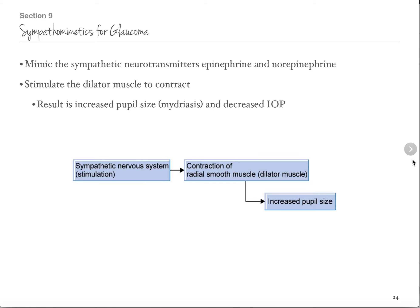We can also use sympathomimetics — they mimic epinephrine and norepinephrine, stimulating your sympathetic nervous system. In the eyeball, that dilates your pupil — because you have to be able to see to run from the bear. If you use too much it can go systemic, but normally it stays local. Dilating the pupil allows it to drain better and improves the outflow of the aqueous humor, decreasing intraocular pressure.